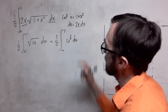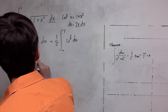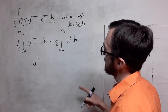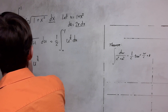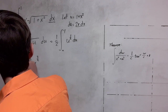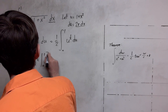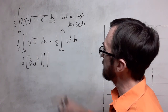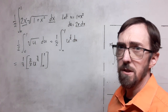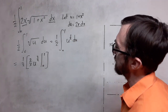If I add 1 to the exponent we get 3 halves. And then I need to multiply that 3 halves by something to give me 1, so that's going to be 2 thirds. We're going to evaluate that from 0 to 1. This is the antiderivative we're going to use, but it's not quite done yet because it's in u form. We're going to have to substitute back in for u.